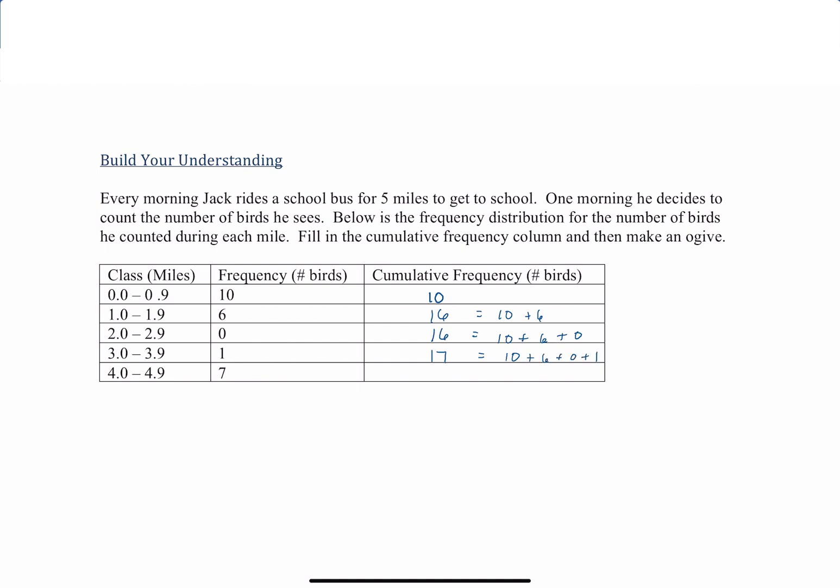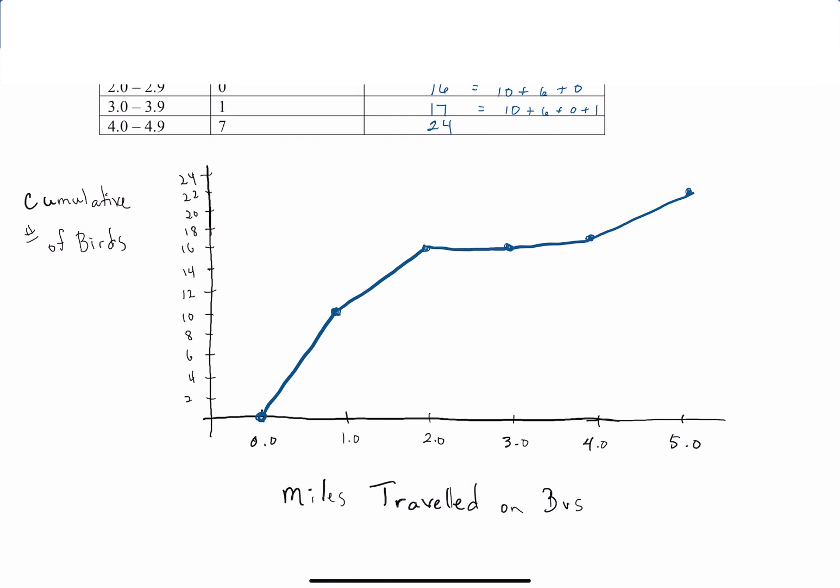And last in the fifth mile he saw seven birds, so that's a total of 24 birds that he saw. And then your ogive should look something like this.